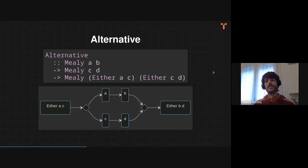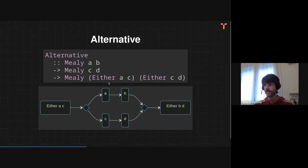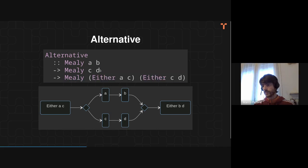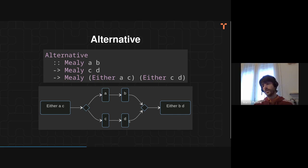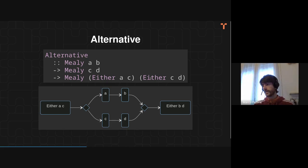There are other ways to compose state machines. For example, we can compose them alternatively — deciding either to use one or the other. If we have two Mealy machines, one going from A to B and one going from C to D, we can decide whether to use the first or the second machine. We get back either a B or a D. So in the end we get a bigger machine which takes an Either A C and returns an Either B D.